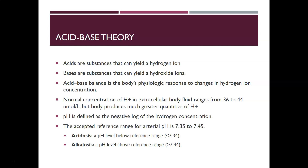The accepted reference range for arterial pH is 7.35 to 7.45, so your ideal neutral body pH is 7.4. This can be confusing because in regular chemistry, 7 is neutral, anything from 0 to 7 is acidic, and 7 to 14 is alkaline. But for the body, we move that neutral point to 7.4, with a buffer area of 7.35 to 7.45 as normal physiologic pH. A person would be in acidosis if their pH is below 7.35, and in alkalosis if their pH is above 7.45.